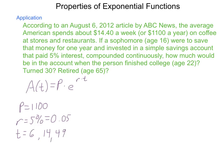So first, we're going to write our equation. A of t equals 1,100 times e to the 0.05 t power. And we're going to go through and calculate for different t values and what A of t would be with those. We're looking at t values of 6, 14, and 49.